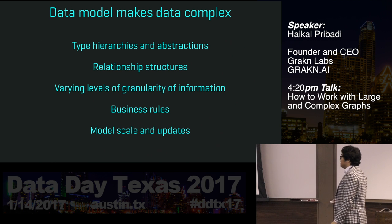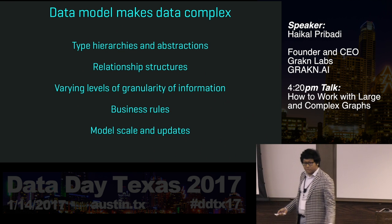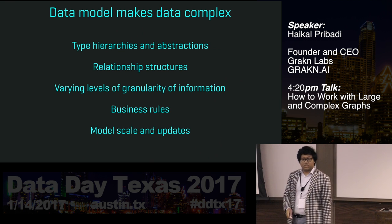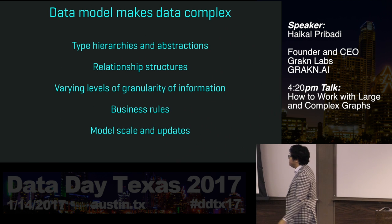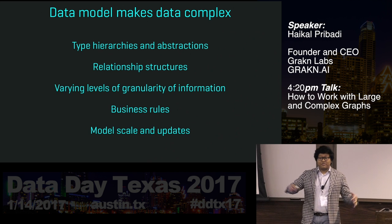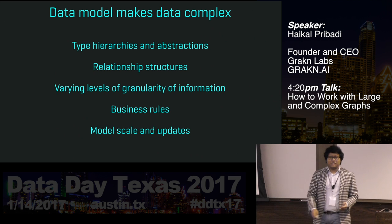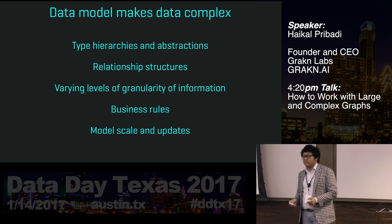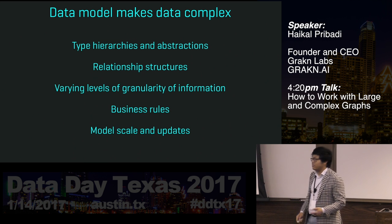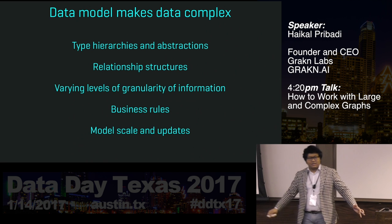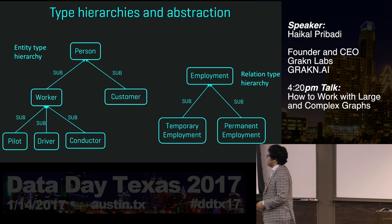The problems you see in the model you have to build are: type hierarchies and abstractions; relationship structures that are not possible to be represented in the kinds of databases we have; varying levels of granularity of information you try to collect; and business rules that big enterprises have to comply with that regulate the way they operate. And also the fact that the scale of the model is just really big and it always needs to be updated.